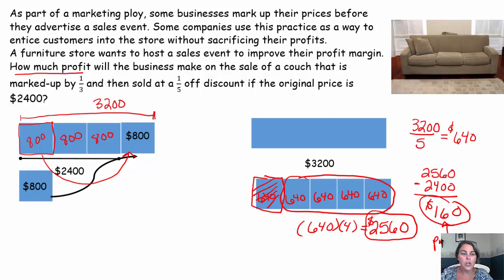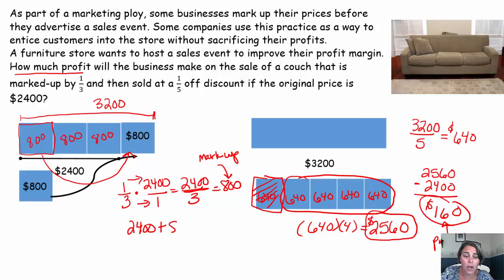I just want to say, if the visuals are not helpful to you, you can always do this. If you know it's marked up by one-third, the markup rate is one-third times the original of $2,400. That's $2,400 over 1, straight across the top, straight across the bottom. That's $2,400 over 3. $2,400 divided by 3 is actually $800. So that right there would be your markup. So you could always take your original of $2,400, add on your markup of $800. That gets you to the new selling price of $3,200 for the couch. That's the new selling price.